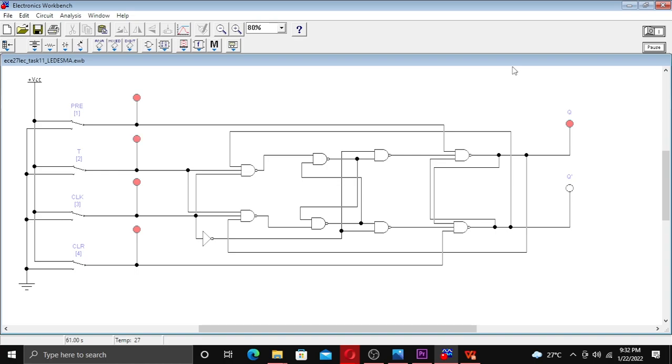But if we turn the clock low to high, it toggles. That's the basic function of T flip-flop. And that's the end of my presentation. Thank you for watching.